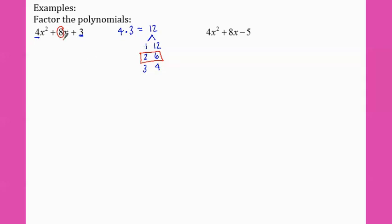So instead of eight x, I'm going to turn it into two x plus six x. I'm going to bring down my four x squared and my three, and now I'm going to factor by grouping.